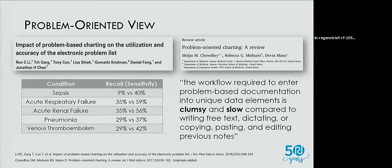The problem list has been shown to decrease the time of information retrieval. Patients who have systolic heart failure on their problem list are more likely to have ACE inhibitors prescribed, so doctors follow guidelines better. However, when clinicians have been forced to use problem-based charting, one of the known challenges is that the current setup is not usable — it's clumsy, it's slow. Doctors find it still easier to do the narrative.